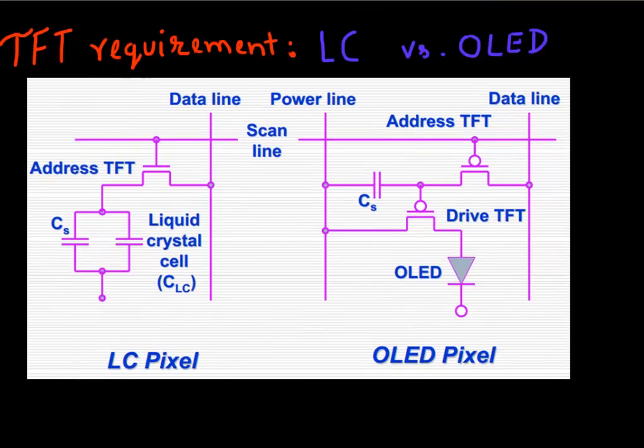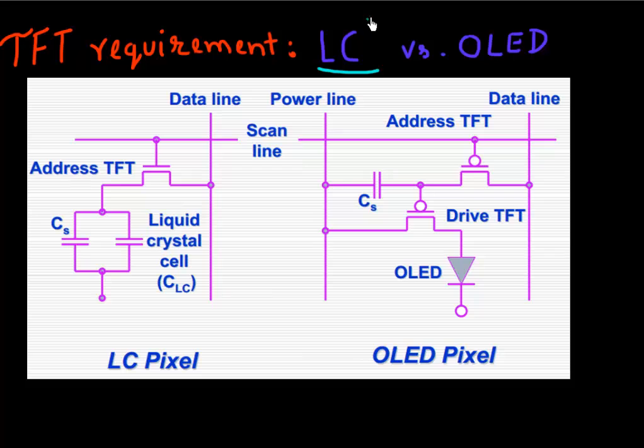If you have a liquid crystal based display, then the important thing is you need to apply a voltage. For a liquid crystal display, the important output parameter is the voltage. For an OLED-based display, the important output parameter is the current. That essentially leads to a bifurcation of how this circuitry looks.